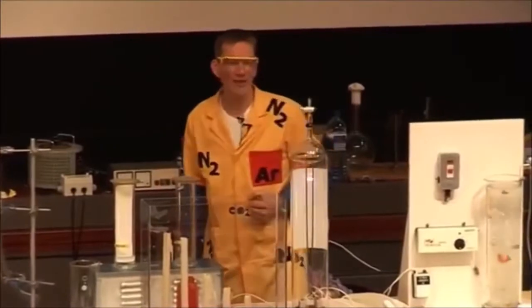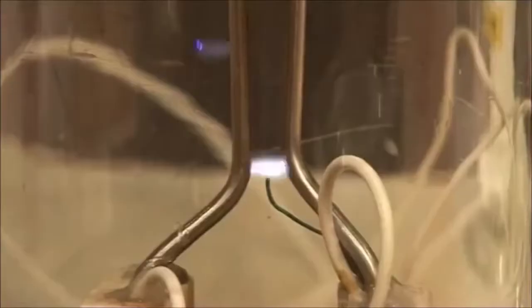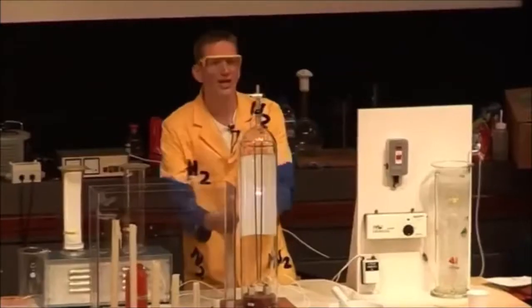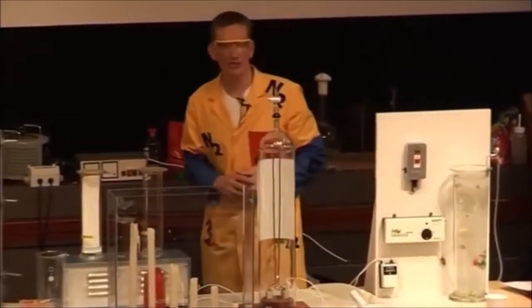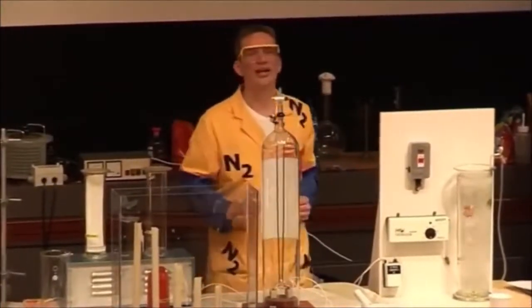And this is what we have here. This is called a Jacob's ladder. Now, across the two metal rods here, at around 7,500 volts of energy. And this can enable the nitrogen to combine with the oxygen.